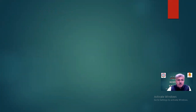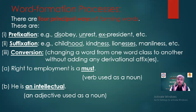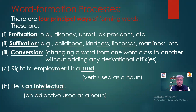First, prefixation — new words formed by adding a prefix. For example, 'obey' is a root, and by adding prefix 'dis-', a new word 'disobey' is formed. Also: rest → unrest, president → ex-president. This is the word formation process of prefixation. The second word formation process is suffixation — new words are formed by adding a suffix.